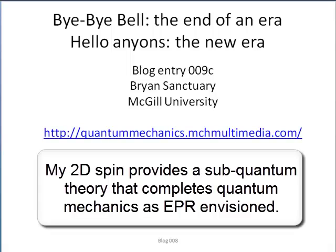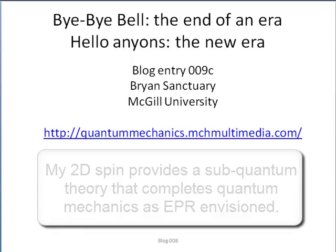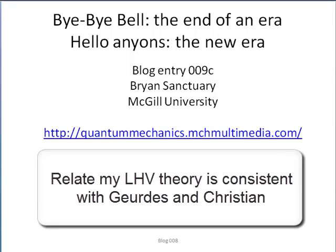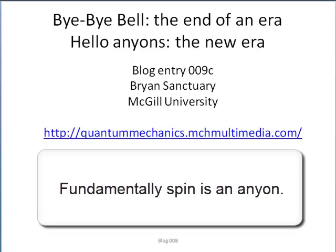My two-dimensional spin, discussed in this blog, provides that sub-quantum theory that completes quantum mechanics, in the sense that EPR envisioned in 1935. So in this last part of blog 009, I will show how my local hidden variable theory is consistent with Girds and Christian, and that spin is at the most fundamental level an ennion.